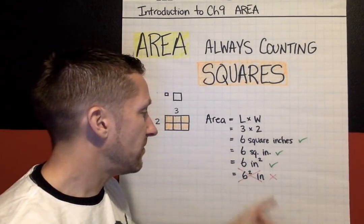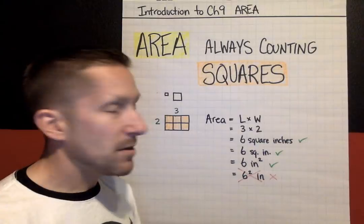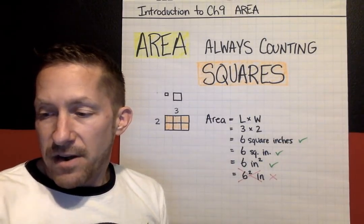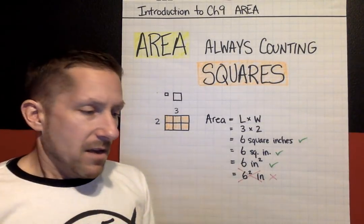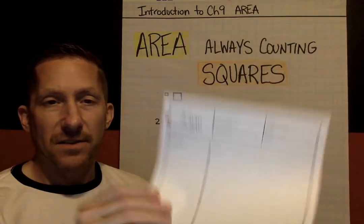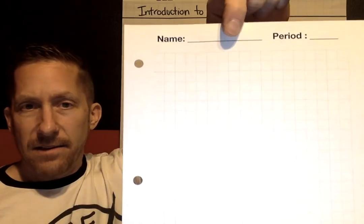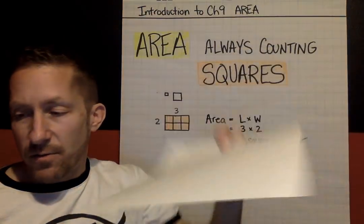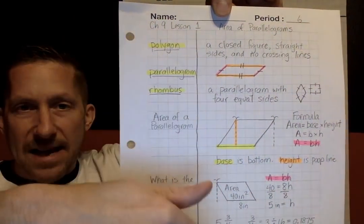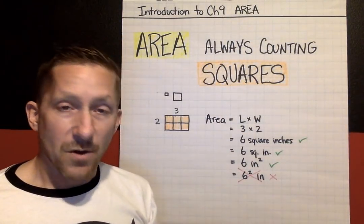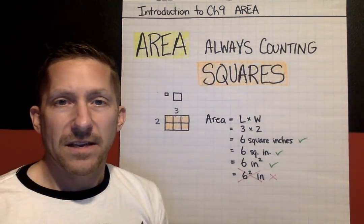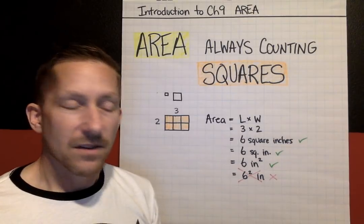Be careful about putting the exponent next to the number. If you're going to use the exponent to indicate squares, it has to be squaring the unit. That's pretty much it for the intro to area. The other quick thing I wanted to tell you is that for this chapter, instead of using our normal Avid focus note page, use some grid paper. You can draw a line to make it like focus notes, but especially for this chapter, because we're counting squares, using grid paper is going to be easier.